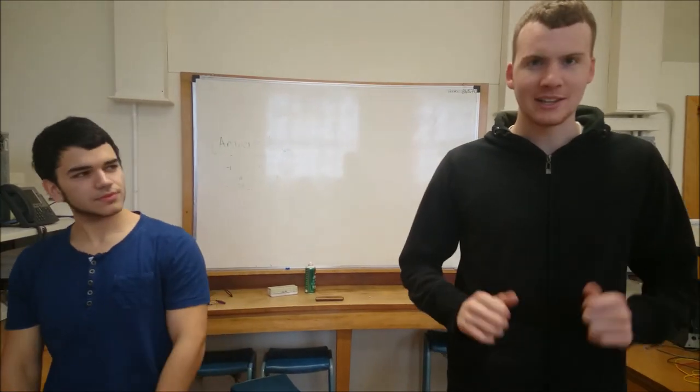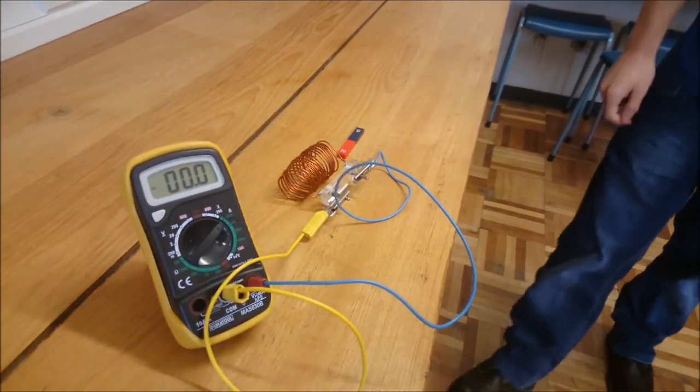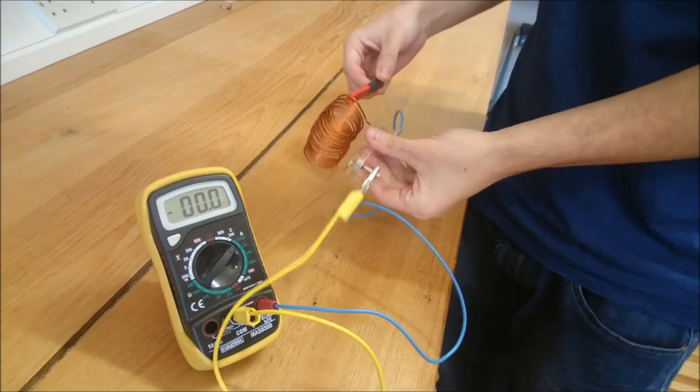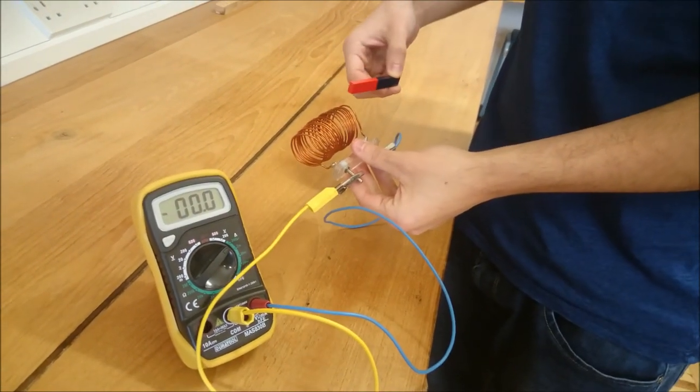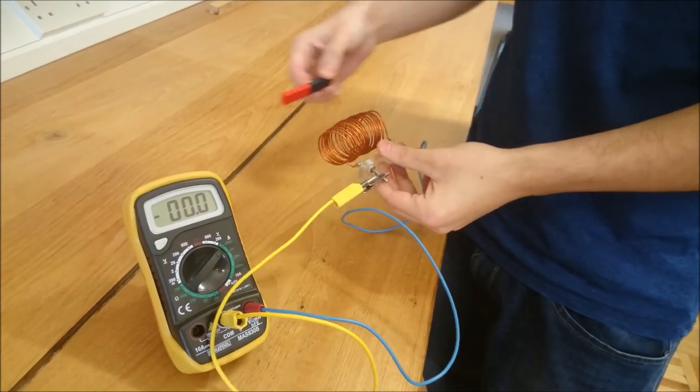How do we prove that Faraday's law exists? Well, here we have a simple setup of an ammeter, a coil, and a magnet. So we're just going to take the magnet and run it through the coil. That will cause a change in flux, which will induce the current in the coil, which will be picked up by the ammeter just here.